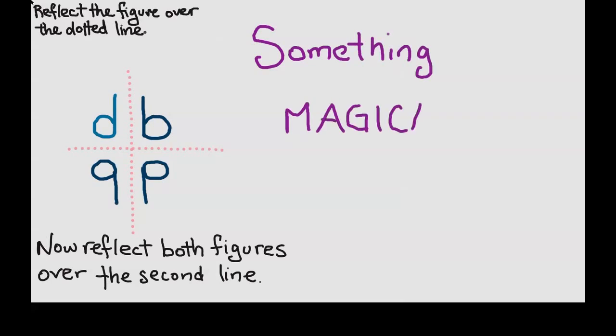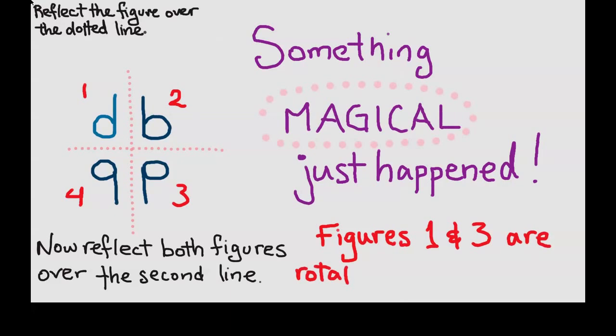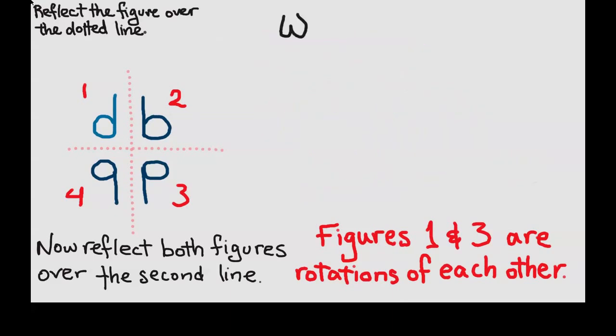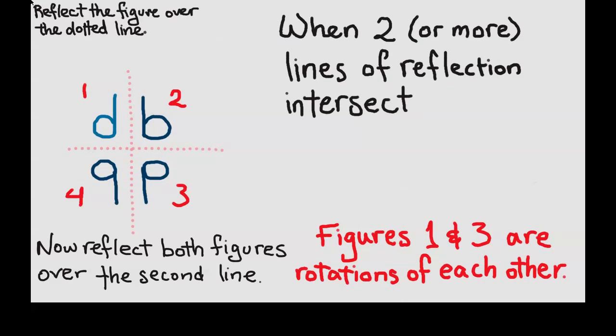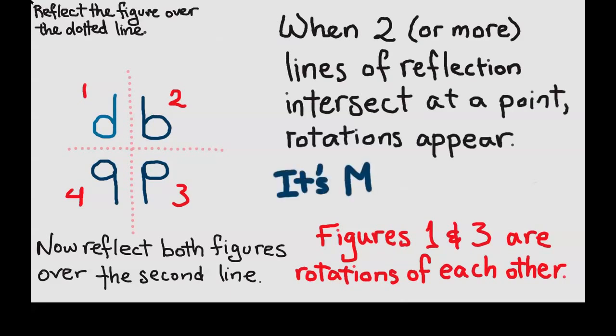Something magical just happened. We noticed that figures one and three are rotations of each other. Even though we only did reflections, we in fact created a rotation. It turns out that when two or more lines of reflection intersect at some point, then rotations appear. I like to think of it as mathematical.